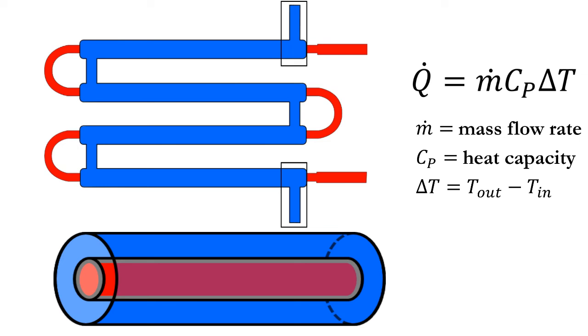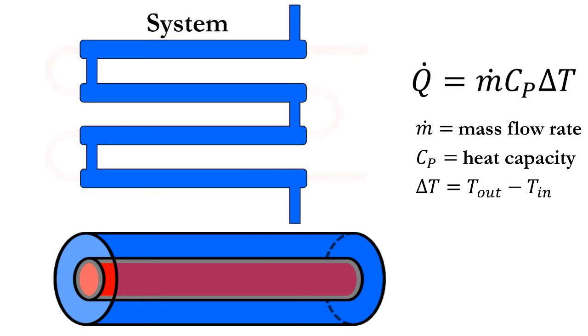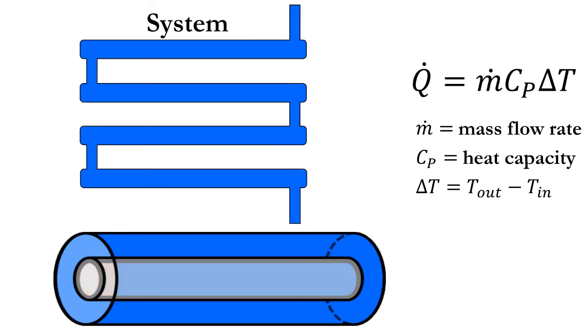Finally, we can measure the temperatures at the cold water inlet and outlet, so our boundary should cross these locations. Using all of this information, the correct choice for our system is the entire volume through which the cold fluid is passing, and the correct system boundary is the annular space for cold fluid flow.